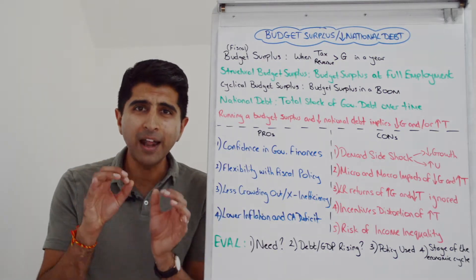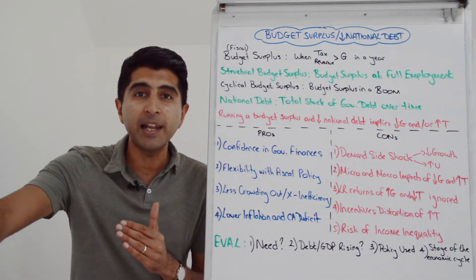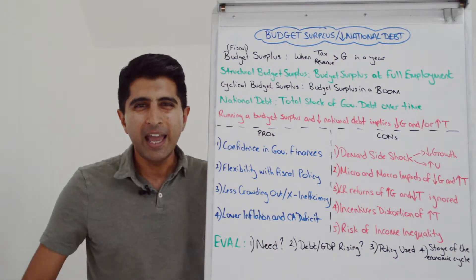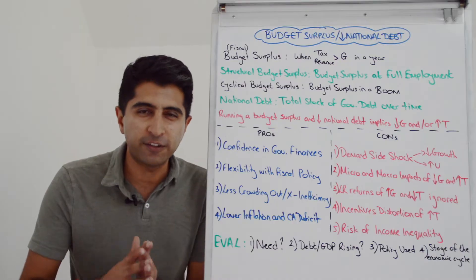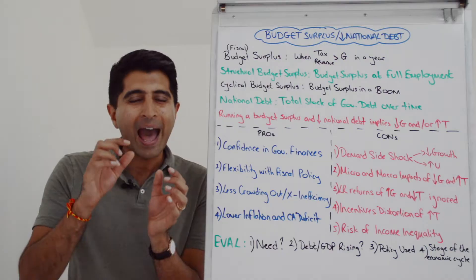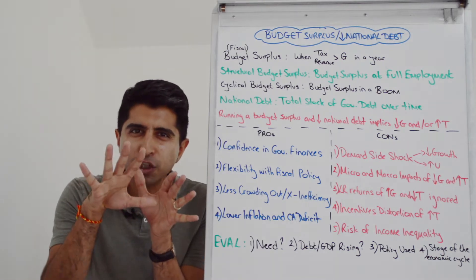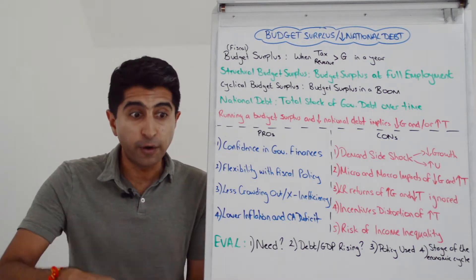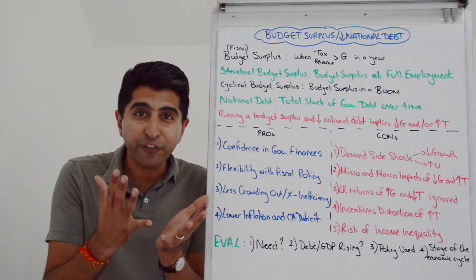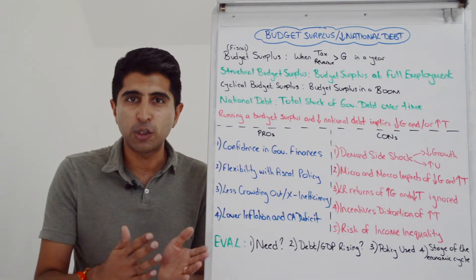With sustainable government finances, there can be greater flexibility for fiscal policy whenever it's needed in the future. If budget deficits are low, budget surpluses are being run, and national debt is low, governments could be operating within their fiscal rules, allowing them fiscal headroom. And if national debt figures are coming down, there will be less spending on debt interest, less servicing of that debt, freeing up government spending and cuts in taxation whenever necessary.